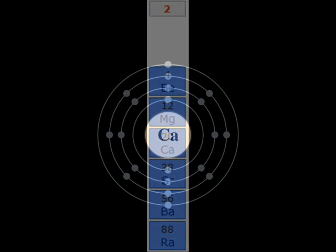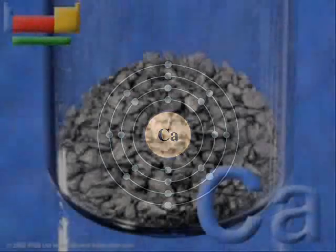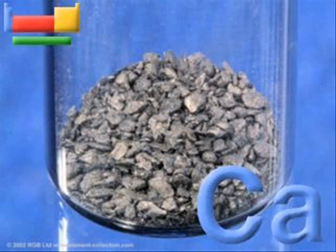Calcium has 20 protons, neutrons, and electrons. It has 4 electron shells and 2 valence electrons. Its color in solid form is shiny and silver.